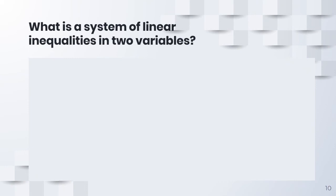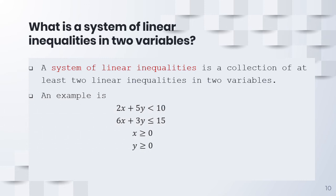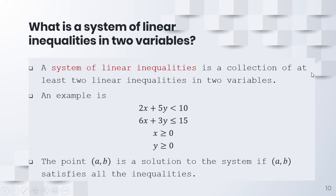Now, what is a system of linear inequalities in two variables? Basically, a system of linear inequalities is a collection of at least two linear inequalities in two variables. The idea is that you have linear inequalities that are simultaneous. A point (a, b) is a solution to the system if this point satisfies all the inequalities in the system simultaneously.